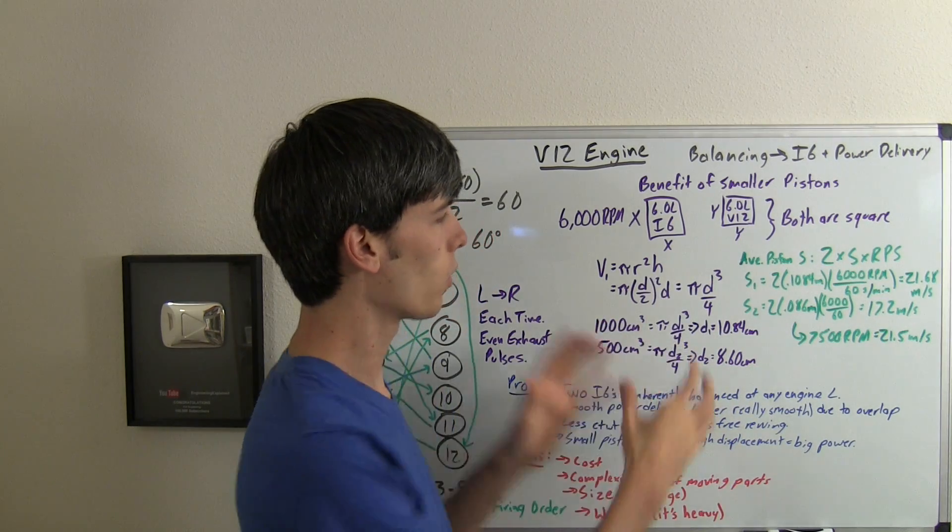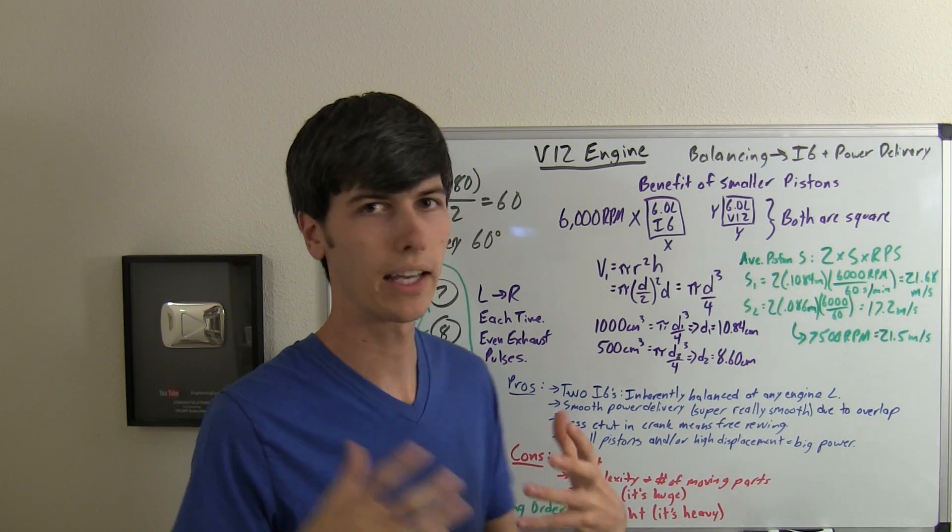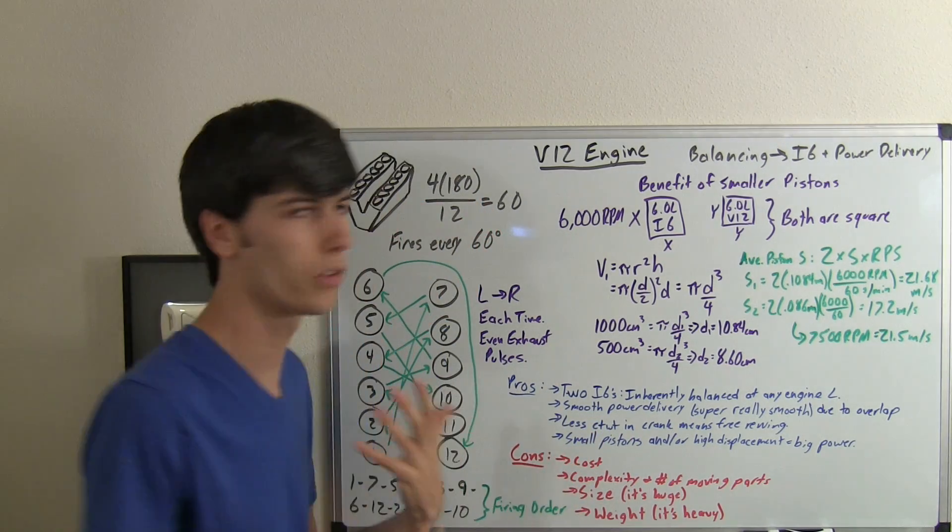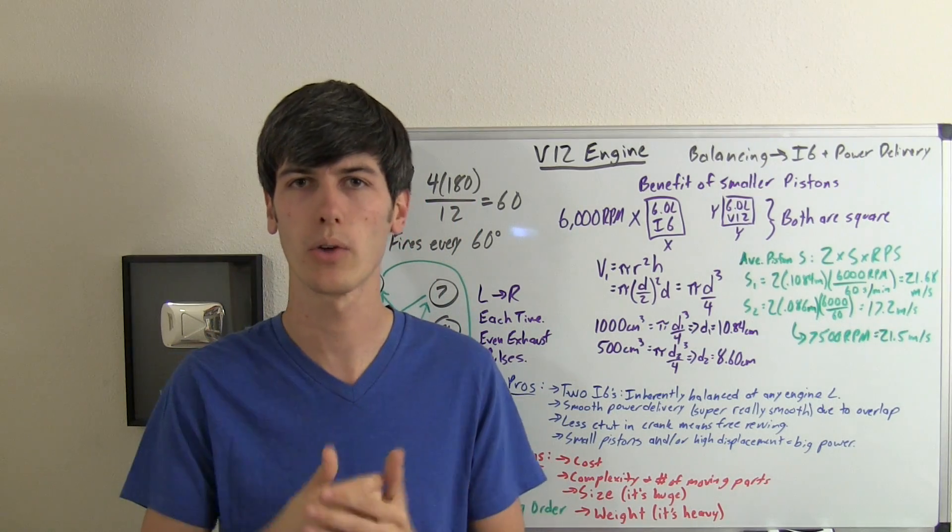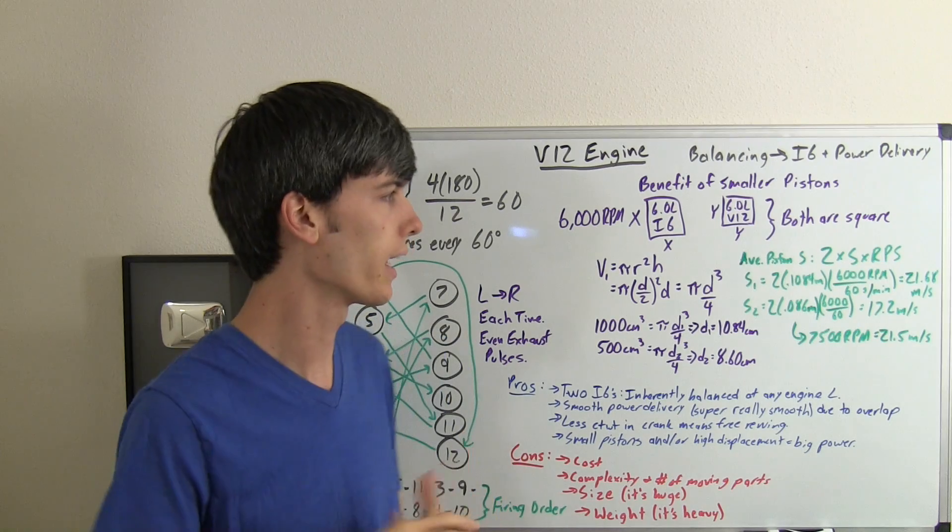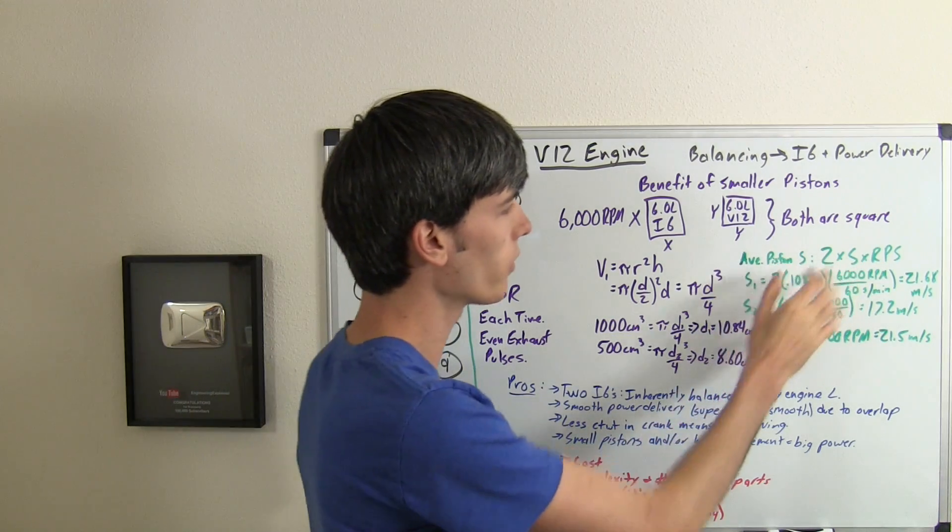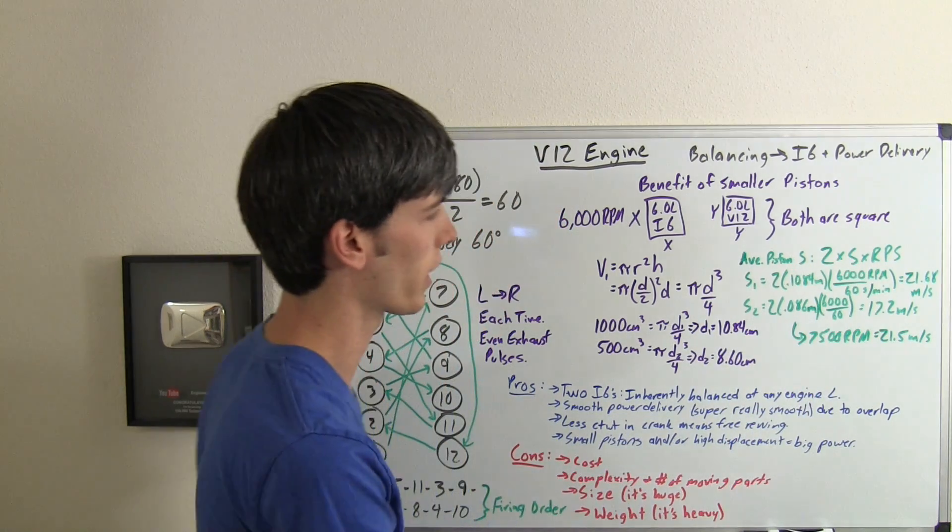Now, the reason why we did that math is to calculate the average piston speed of each of these, and by calculating the average piston speed, basically there's a limitation on engines of this. So your piston can only move so fast. And if you've watched my video on average piston speeds, I get a little bit more into detail on that. So average piston speed equals 2 times the stroke times the revolutions per second.